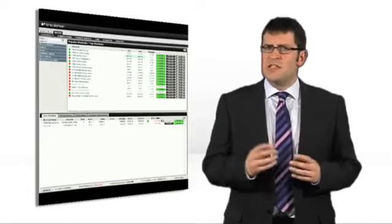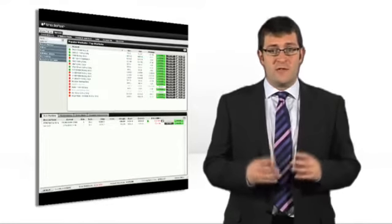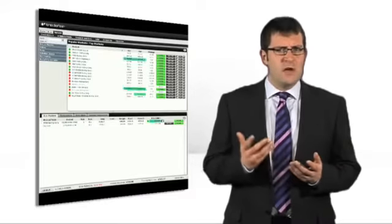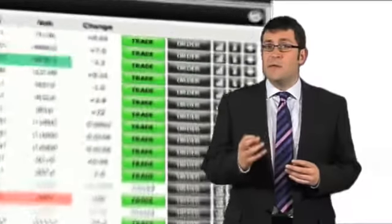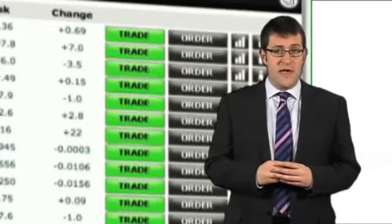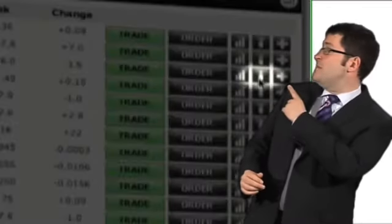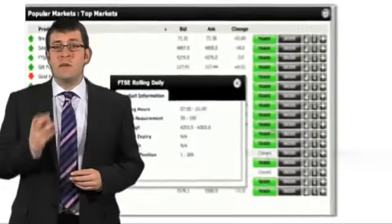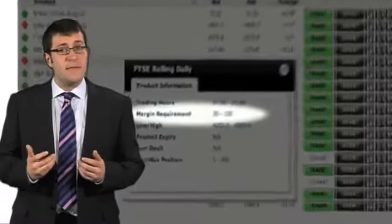OK, margin. Margin is the amount of money you need deposited in your account to be able to participate in a trade, and that varies depending on each market. To find out the minimum and maximum margin before placing a trade, just click on this little I button here and you'll get this dialogue box. Here on the footsie, the minimum margin is 30 and the maximum is 150.